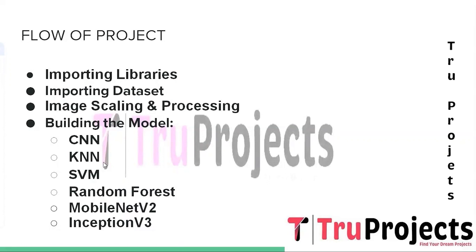The second model is KNN, which stands for K-Nearest Neighbors — a simple and intuitive machine learning algorithm used for classification tasks. In this project, it will be applied to estimate calorie content based on the similarity of food images. When a user inputs an image, the algorithm finds the K nearest food items from the training dataset based on image features, and the calorie values of these nearest neighbors are averaged to predict the calorie content.